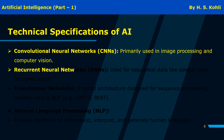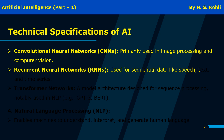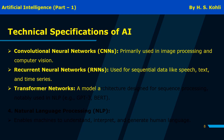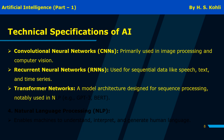Recurrent neural networks (RNNs) are used for sequential data like speech, text, and time series. Transformer networks are a model architecture designed for sequence processing, notably used in NLP — for example, GPT-3 and BERT.